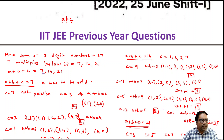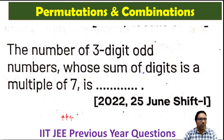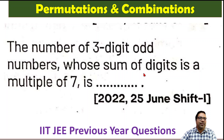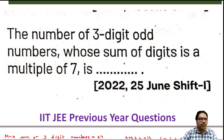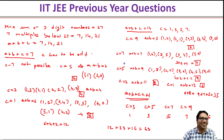Now, a plus b plus c equals 7. At the same time, c has to be odd because we are looking for odd three-digit numbers. So c has to be odd, and a plus b plus c can be 7, 14, or 21. Let us take all three cases.